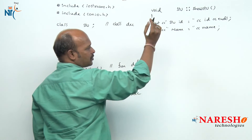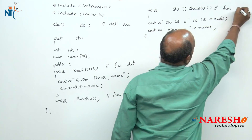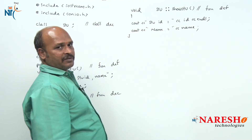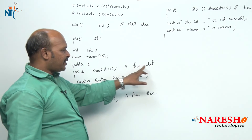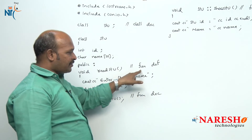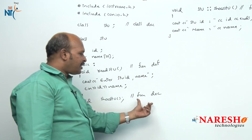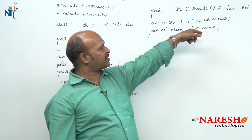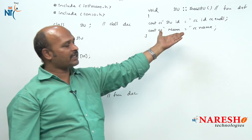Next cout name — name is also printed. Nothing more to print, so I close the function. This is the function definition. To summarize: read_student has its declaration and definition both completed within the class, while show_student has its declaration inside the class and its definition conducted outside the class.